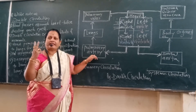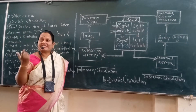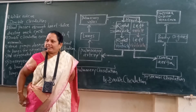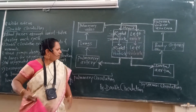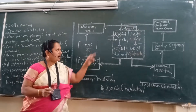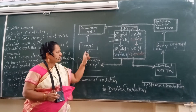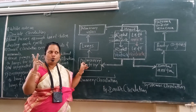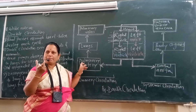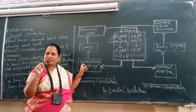It is transported to the lungs through the pulmonary artery. Two pulmonary arteries are present — which carry deoxygenated, or impure, blood. The right pulmonary artery supplies impure blood to the right lung, and the left pulmonary artery supplies impure blood to the left lung.